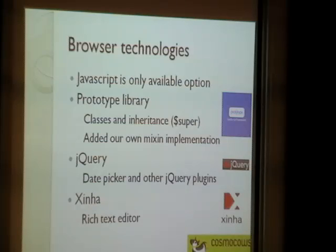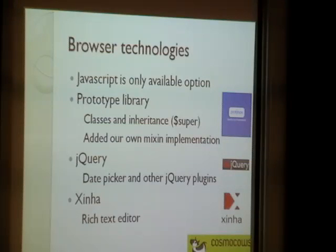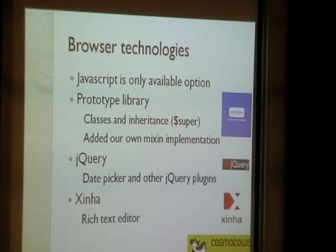The final part we're using on the client side is called Xena, which stands for 'Xena is not HTML Area'. HTML Area is an old text editor written completely in JavaScript, not based on jQuery or Prototype, and it allows you to do rich text editing — it looks like Word running in the browser.